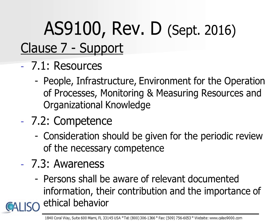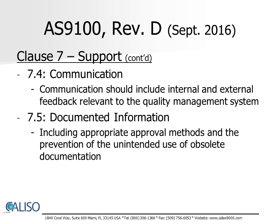Clause 7 states that the organization shall determine and provide the resources needed for the establishment, implementation, maintenance, and continual improvement of the quality management system. This includes the need to provide the people, the infrastructure, the environment for the operations of its processes, the monitoring and measurement of resources, measurement traceability, and organizational knowledge. The requirement for competence includes the necessity of periodically reviewing the competence determined to be critical. Awareness requires that persons shall be aware of relevant documented information, their contribution to the organization, and the importance of ethical behavior. Additionally, Clause 7 includes requirements for communication and documentation. Communication specifically requires inclusion of internal and external feedback relevant to the quality management system, and documented information includes appropriate approval methods and the prevention of the unintended use of obsolete documentation.